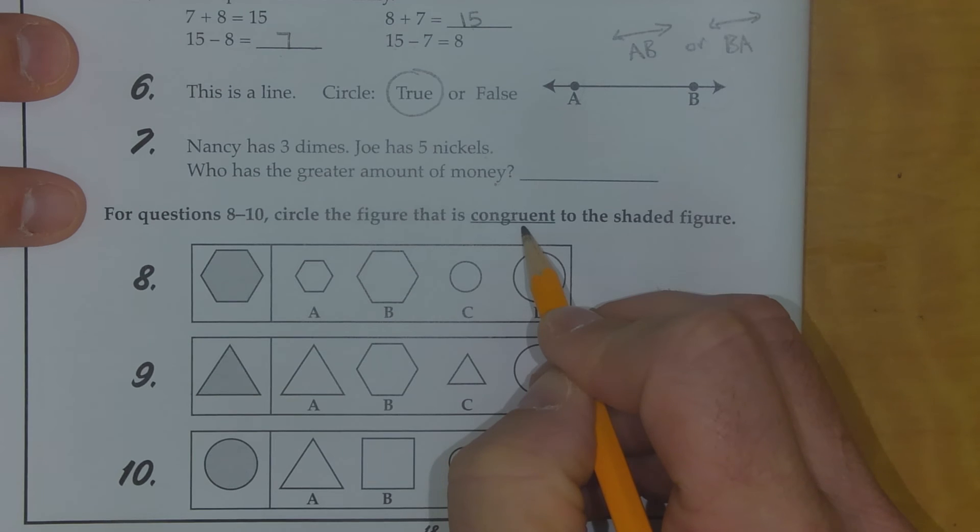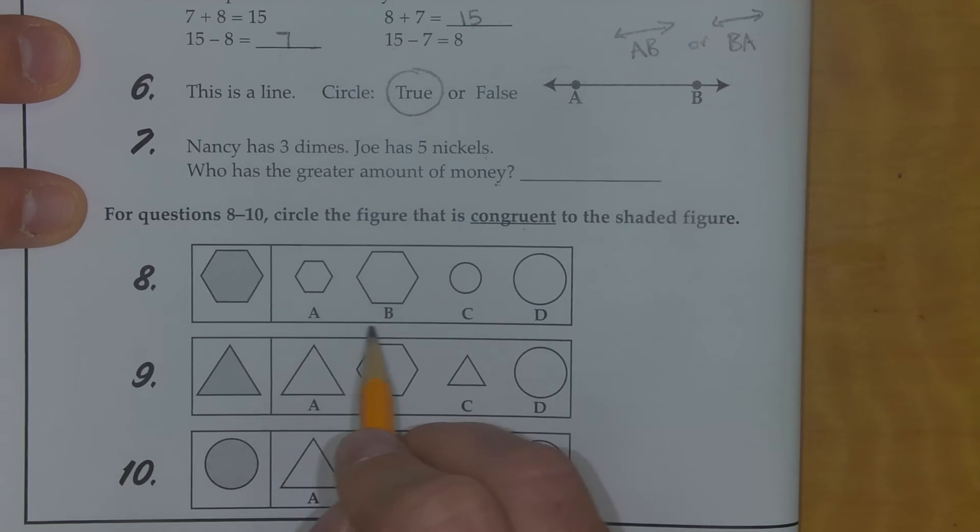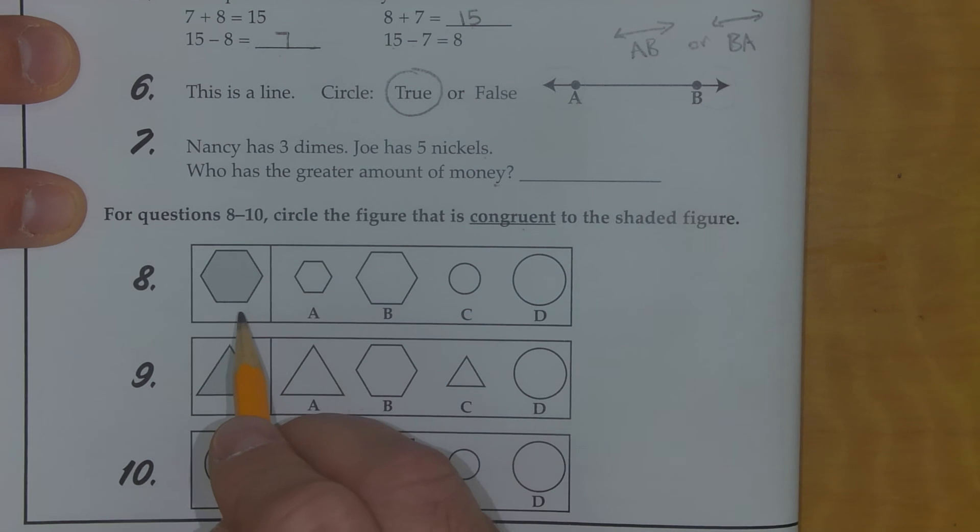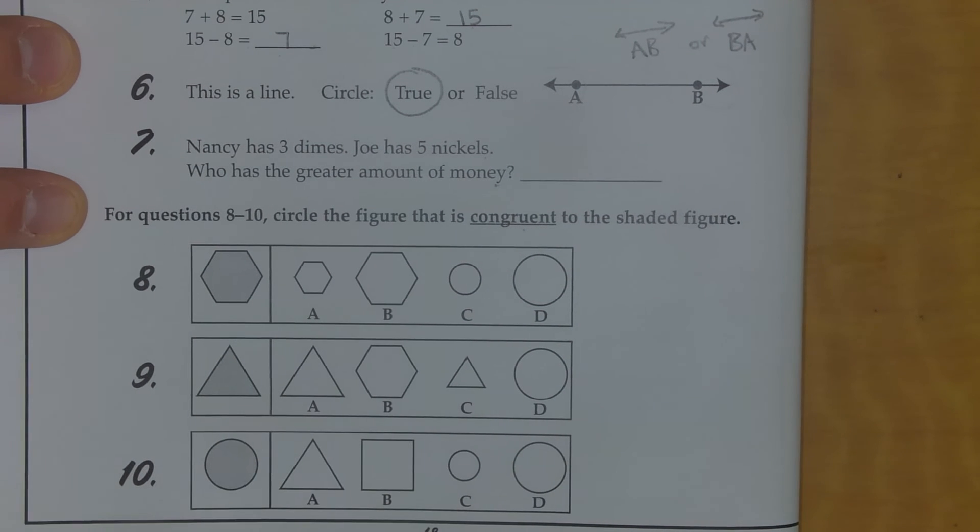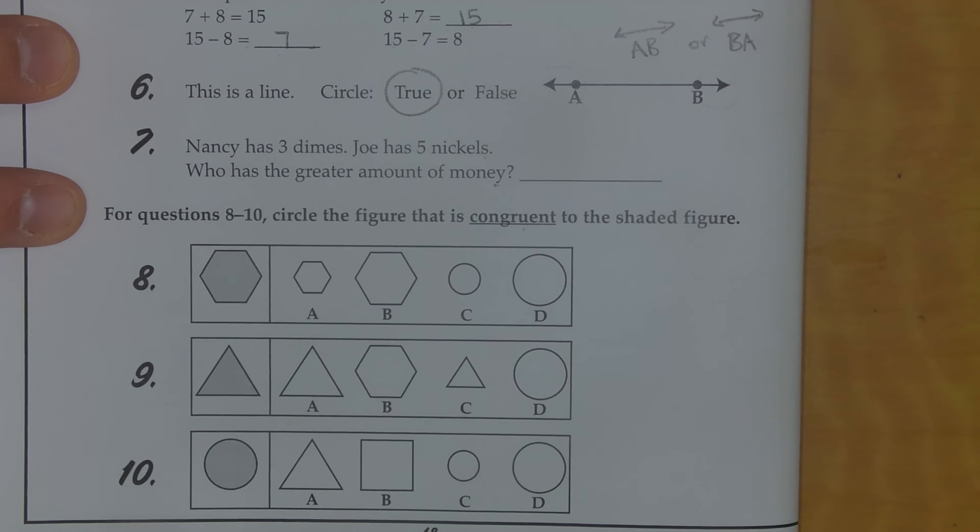Congruent means same size, same shape. So take a look at the boxes below and match the same size and same shape to the shapes that are already there filled in in gray. And then come back and check your work.